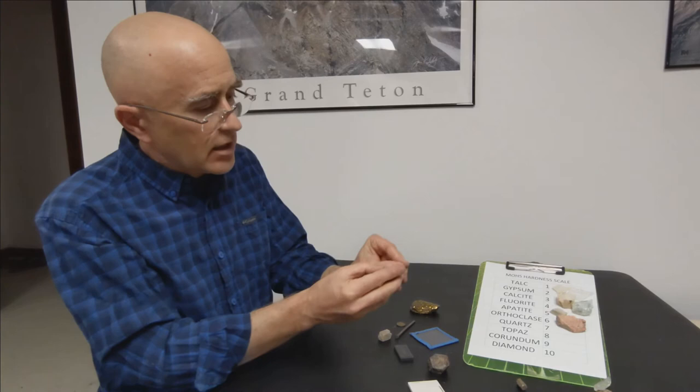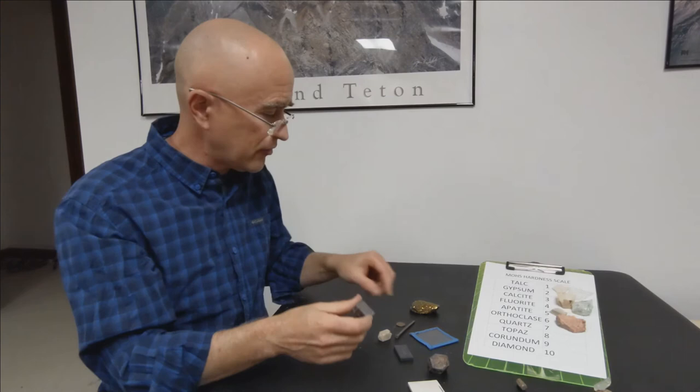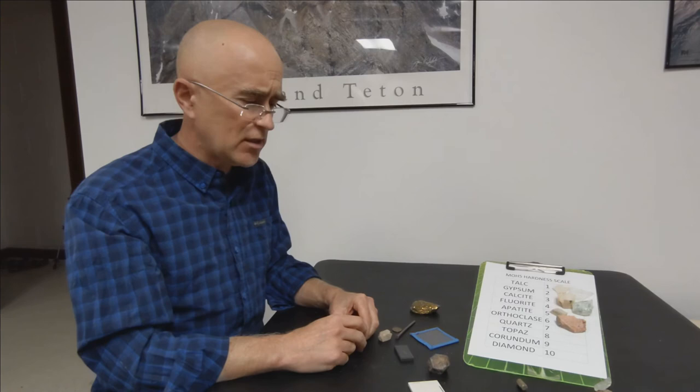I can take it against my fingernail. And very clearly, I get a little scratch mark on my fingernail. So that means the mineral is harder than my nail at 2.5, but softer than the penny at 3.5. That puts this mineral somewhere in the vicinity of a hardness of 3.